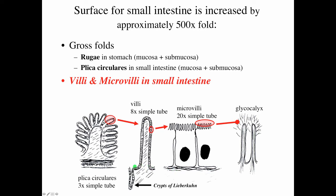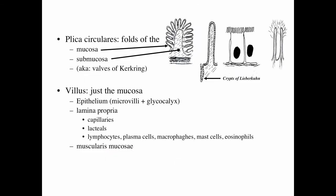Diagrammatically, this shows the villus folding into the lumen; here is the gland or crypt — the crypt of Lieberkühn — and the microvilli, which are elaborate foldings on the apical boundary of each intestinal absorptive cell. Adsorbed onto that epithelial surface is the glycocalyx. This highlights the folds of the mucosa and submucosa; the plica circularis is also called the valve of Kerckring. You can see the crypts of Lieberkühn, the villi, the microvilli, and the adsorbed glycocalyx.